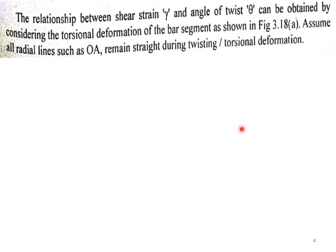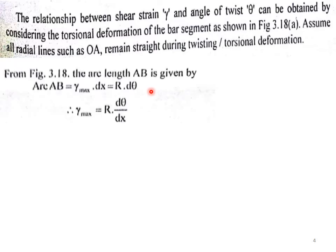The relationship between the shear strain gamma and angle of twist theta can be obtained by considering the torsional deformation of the bar segment which is shown in the figure. We assume that all the radial lines such as OA remain straight during twisting or torsional deformation. From the figure, the arc length AB is given by r times AB equals gamma max into dx equals r into d theta. So shear strain gamma max is equal to r into d theta by dx.